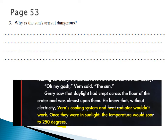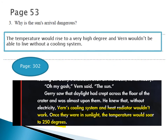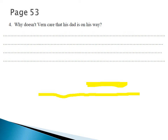In the text, Jerry saw the daylight had crept across the floor of the crater and was almost upon them. He knew that without electricity, Verne's cooling system and heat radiator wouldn't work. Once they were in sunlight, the temperature would soar to 200 degrees. So the danger of the sun is that Verne's cooling system and heat radiator wouldn't function without electricity.